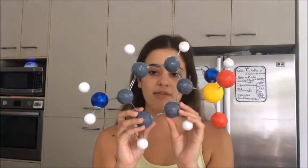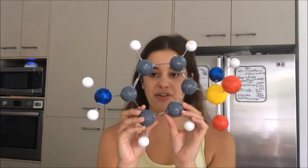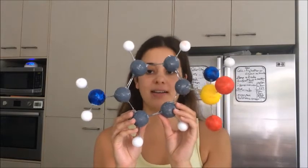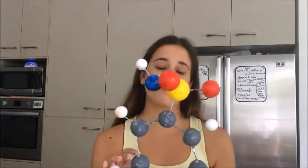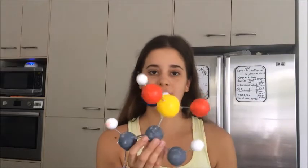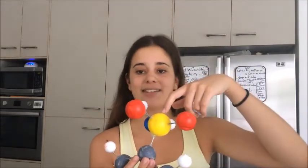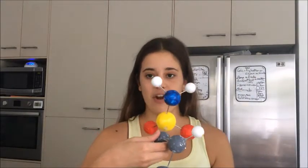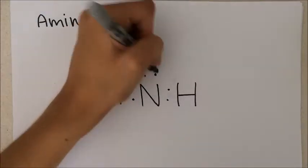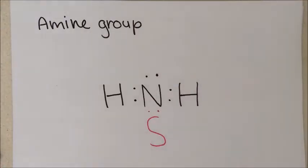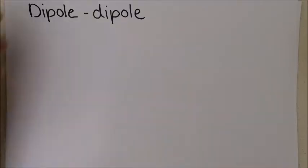Sulfanilamide is part of a sulfonamide antibacterial group. This organic compound consists of a sulfonamide functional group attached to an aniline ring. The sulfonamide functional group is made up of a sulfonyl group — a sulfur atom completely bonded to two oxygen atoms — connected to an amine group. An amine group is a compound that contains a basic nitrogen atom with a lone pair of valence electrons, in this case connected to two hydrogen atoms.